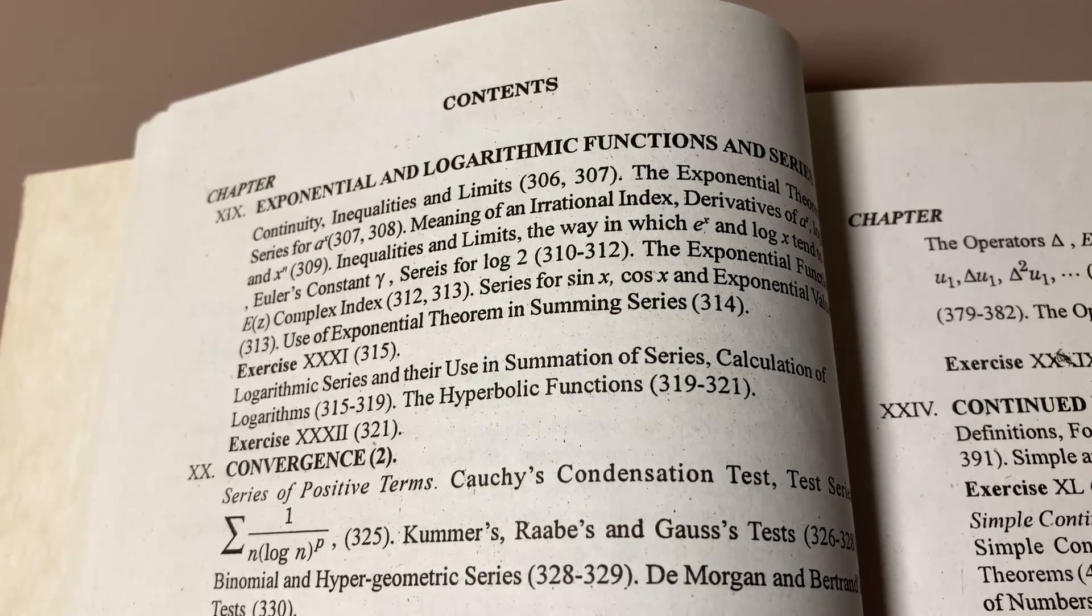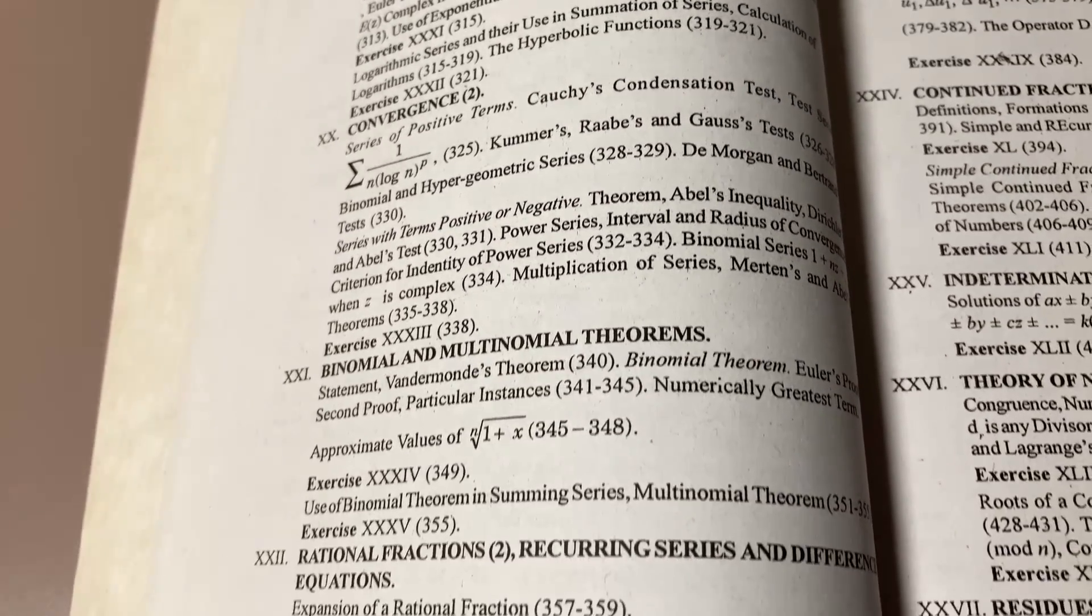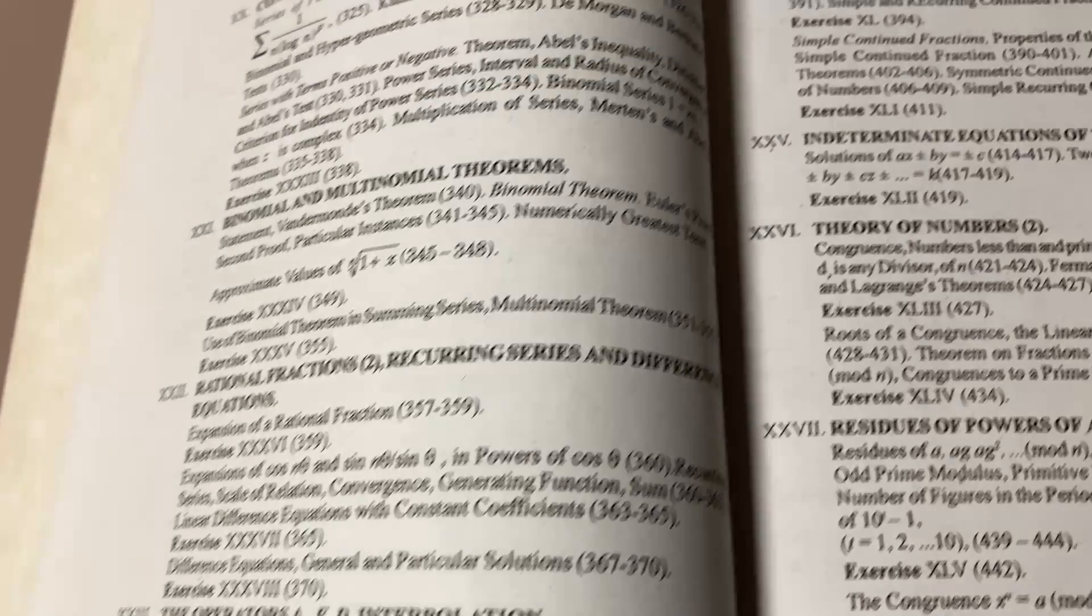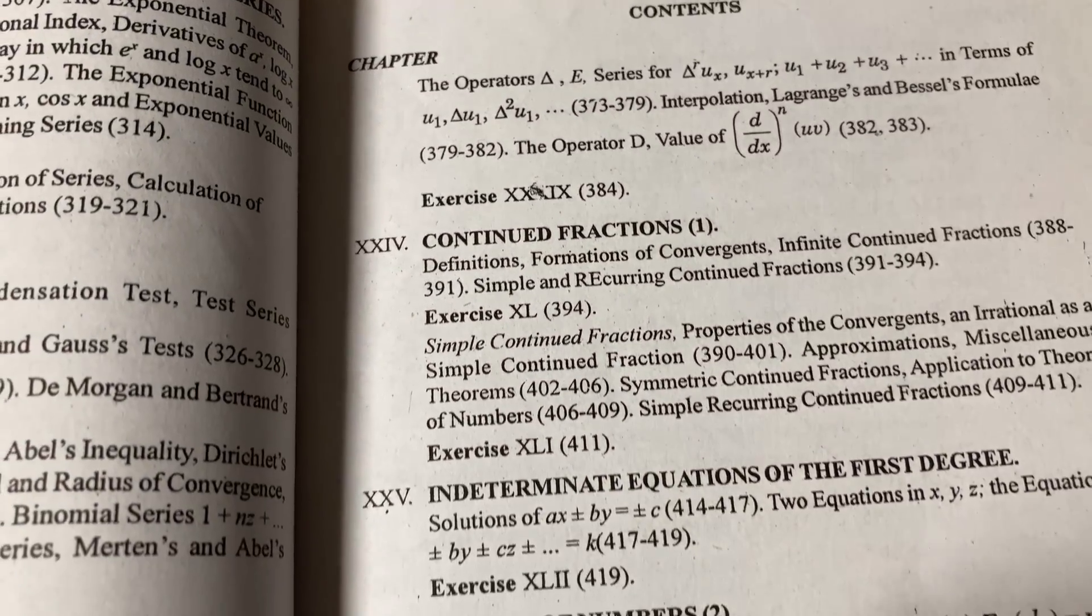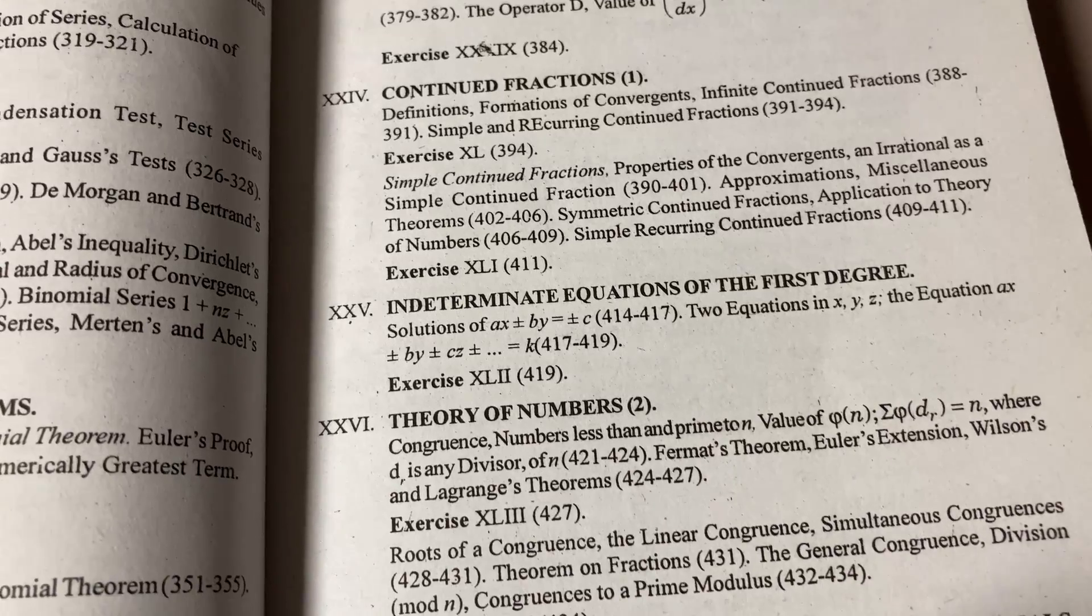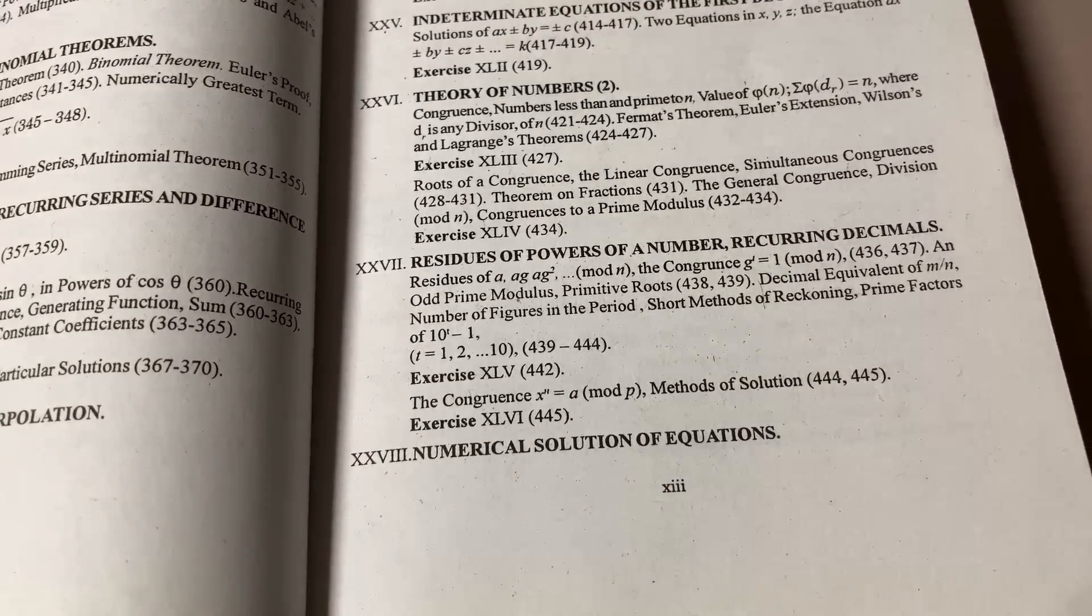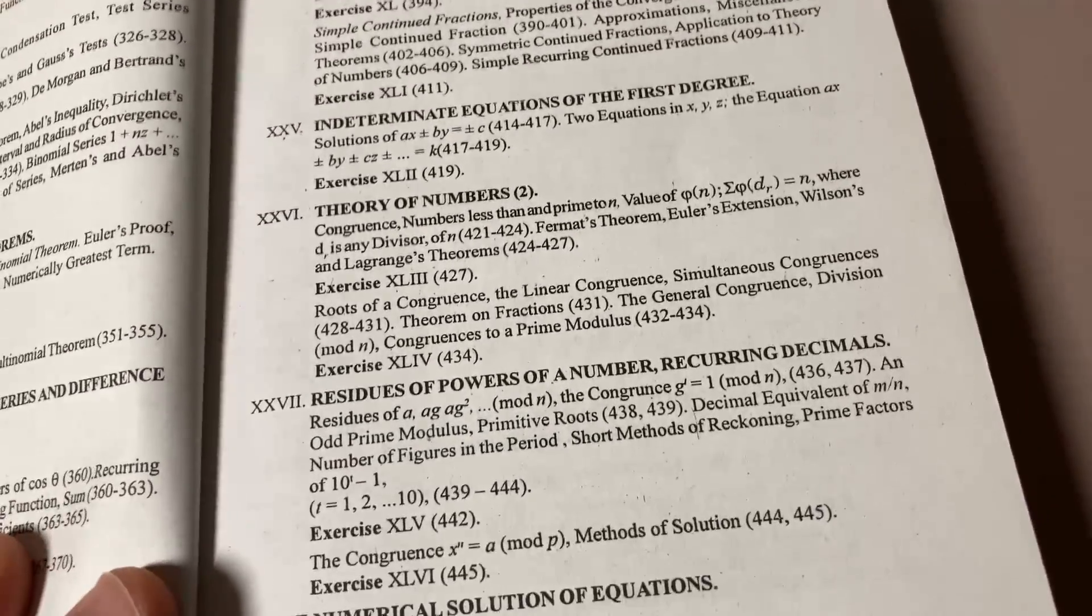This chapter is on exponential and logarithmic functions and series. Then it talks about convergence, binomial and multinomial theorems. So tons of math that you normally wouldn't see in most modern books. So if you were to take a class in college, it's very unlikely that any of your books would contain all of the knowledge that is in a book like this.